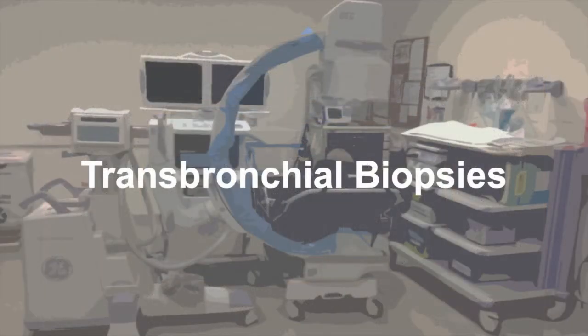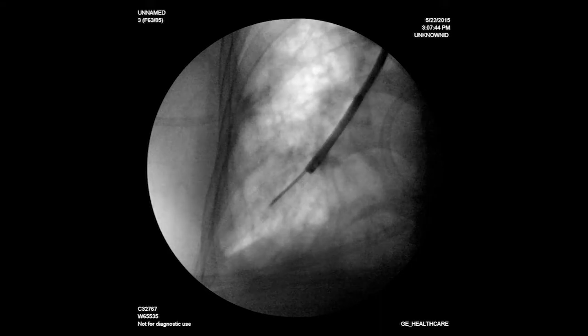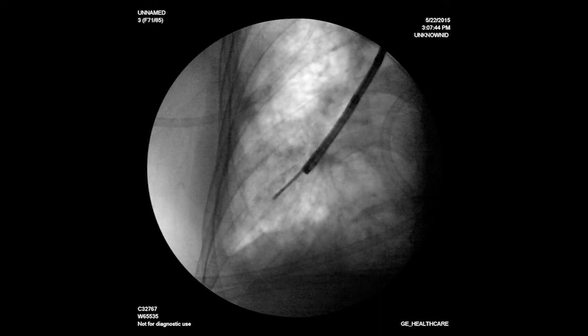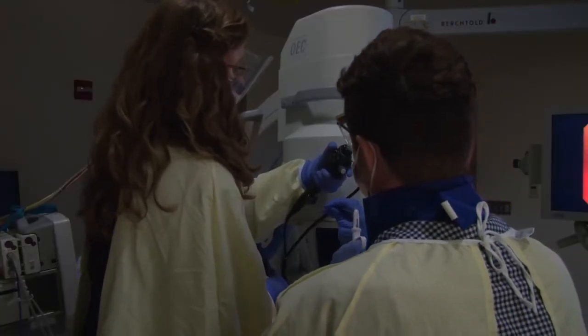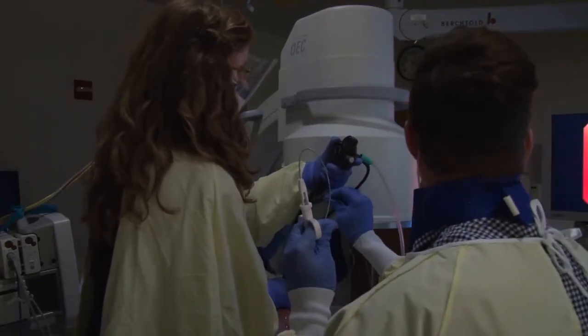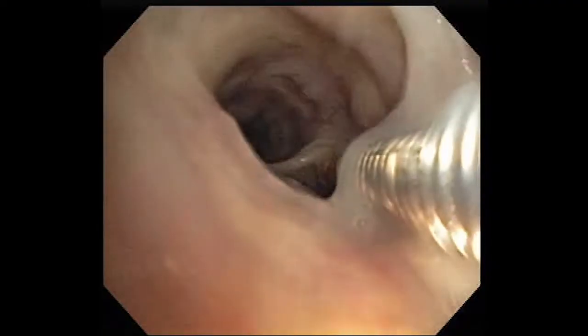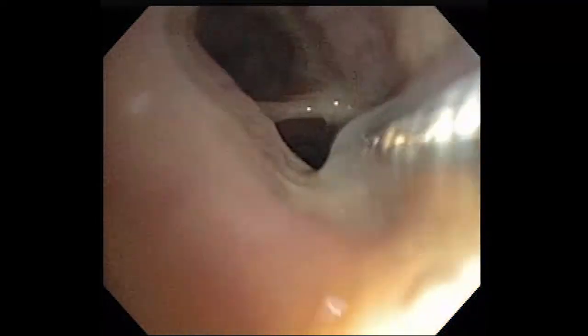Bronchoscopists vary in how they use fluoroscopy when taking transbronchial biopsies. Some just tap the fluoro pedal to get a single image showing the forceps location when taking the biopsy, while others prefer to watch all of the movements of the forceps under fluoro. Let's start by reviewing this approach. Once you've maneuvered the bronchoscope to the right airway, insert the forceps into the working channel and watch the forceps enter the subsegmental airway of interest.